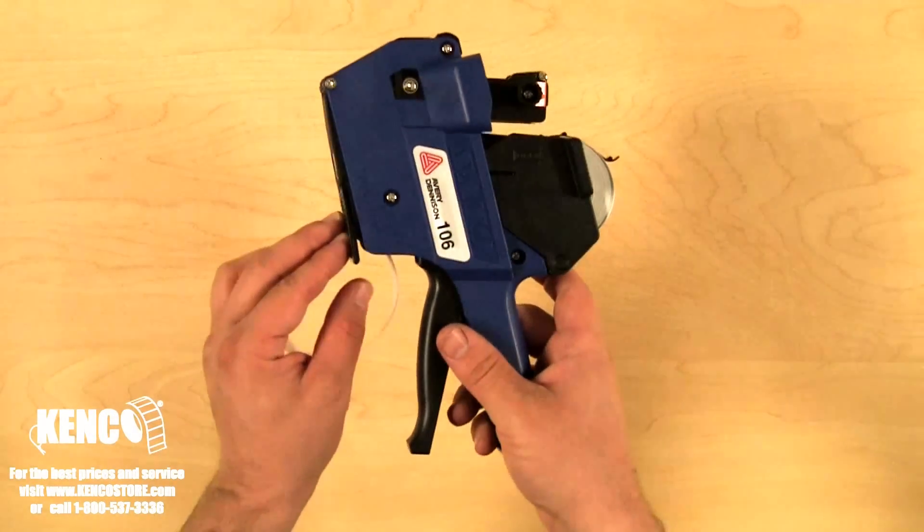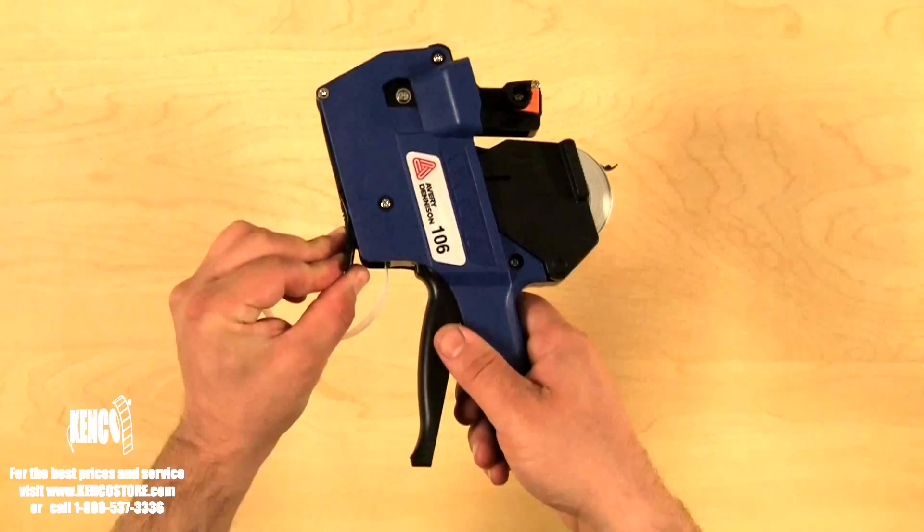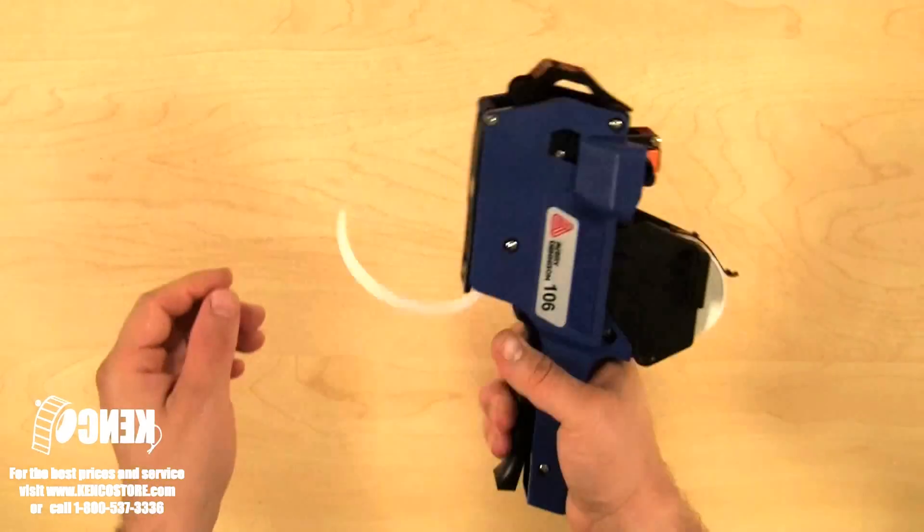We're going to close the latch. Closing the latch is a little difficult. I like to kind of lift up on the latch a little bit and then push it down. And now the gun is loaded.